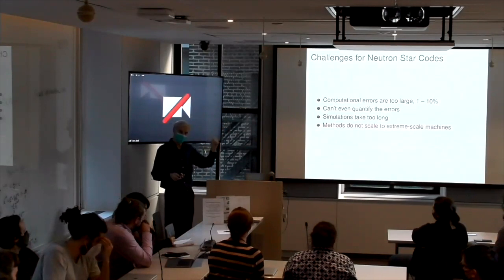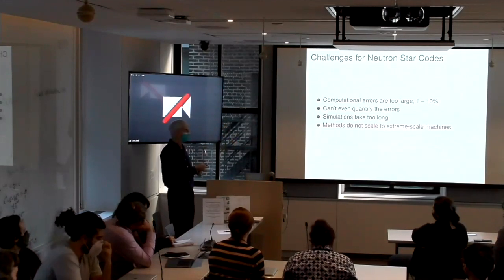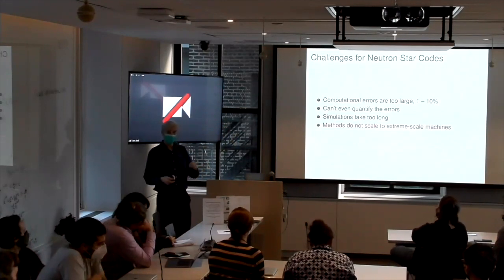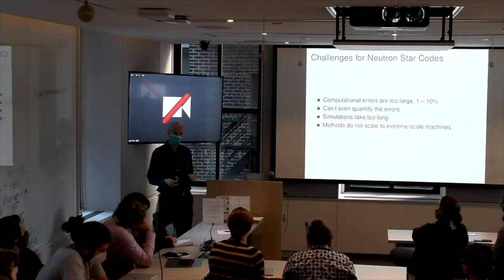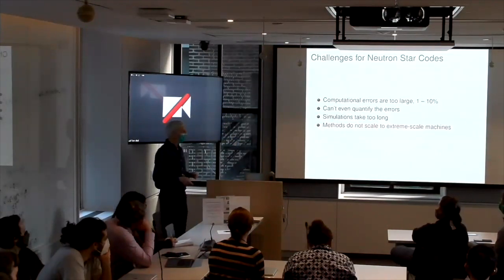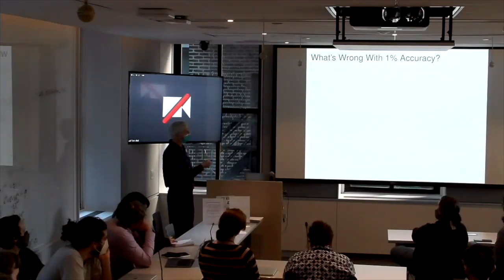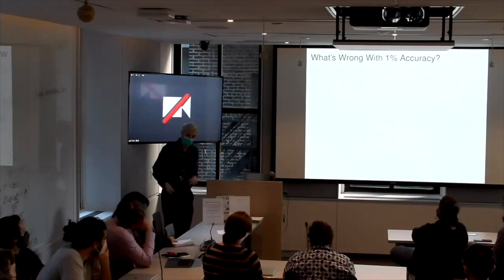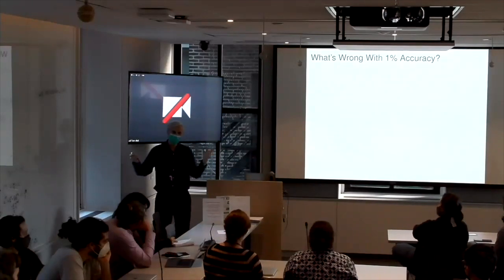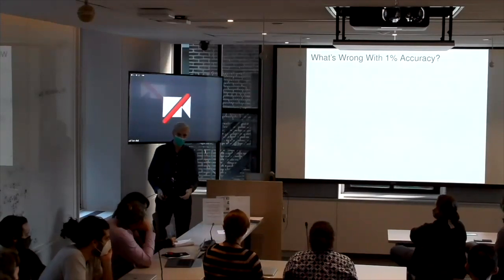But the real problem is the methods that we're using, these things that go back 60 years, do not scale to the next generation of machines. But first, before I get to that, this is astrophysics. What's wrong with 1% accuracy? You should be delighted to understand something.